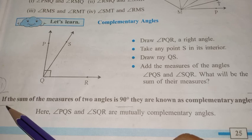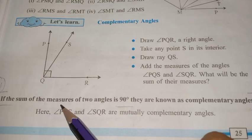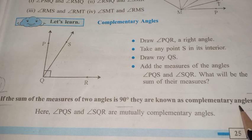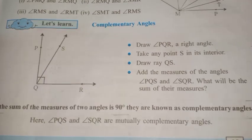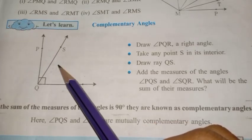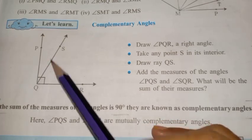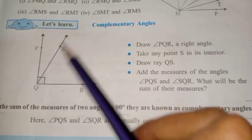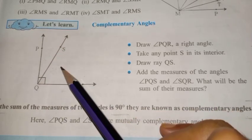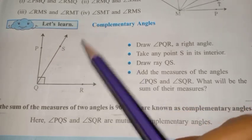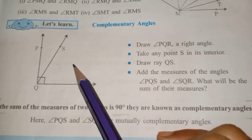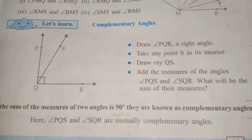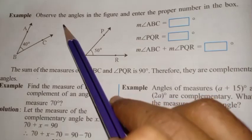This pair is called a pair of complementary angles. If the sum of the measures of two angles is 90 degrees, they are known as complementary angles. To get a pair of complementary angles, it is not mandatory that the angles should be adjacent. If two separate angles are given and the sum of their measures is 90 degrees, those two angles are also called complementary angles.